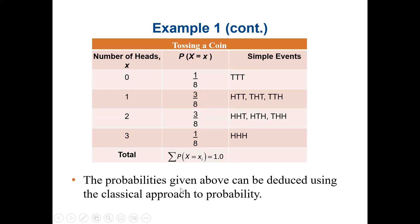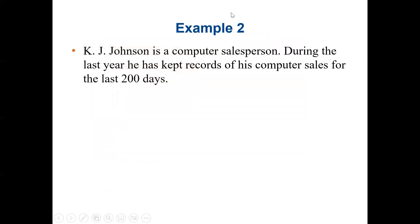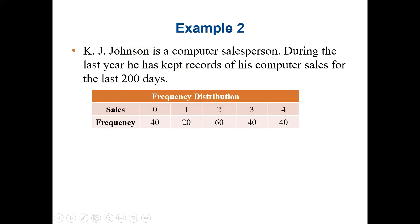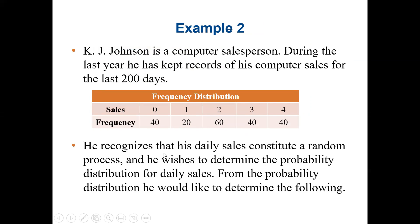The probabilities can be deduced using a classical approach to probabilities. In our second example, KJ Johnson is a computer salesperson who kept a record of his computer sales for the last 200 days. The frequency totals 40 plus 20 plus 60 plus 40 plus 40 equals 200 days. He recognized that his daily sales constitute a random process and wishes to determine the probability distribution for daily sales.